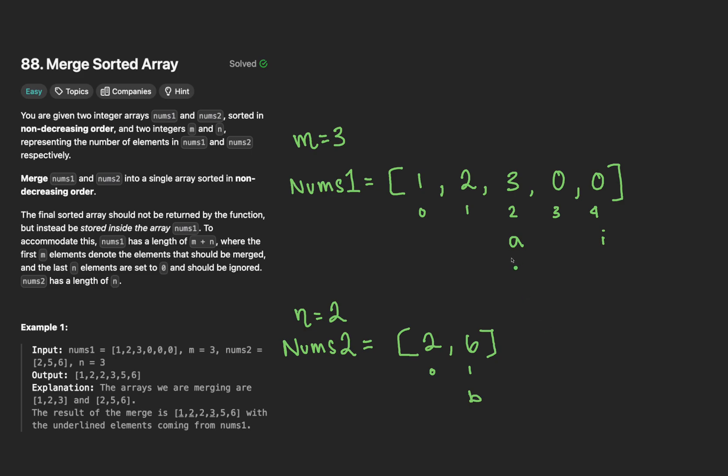What we want to do is compare the element at a with the element at b. And whichever one is larger, we're going to place at our i index. In this case, a is at 3 and b is at 6. 6 is going to be greater than 3. So we're going to place the 6 at our i index. And because we took that element, we're going to decrement b and decrement i and continue on to our next iteration.